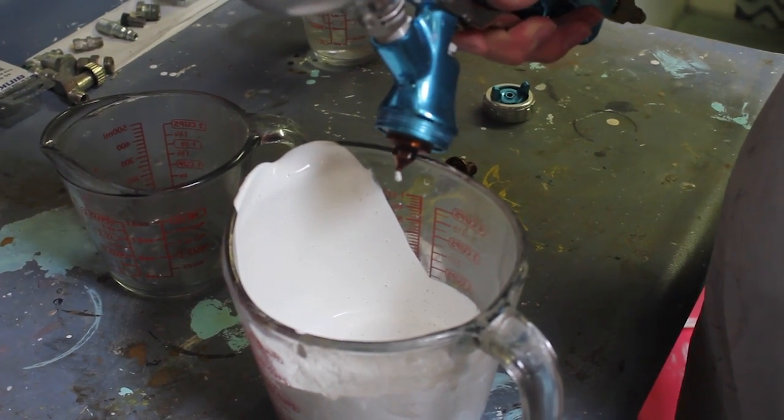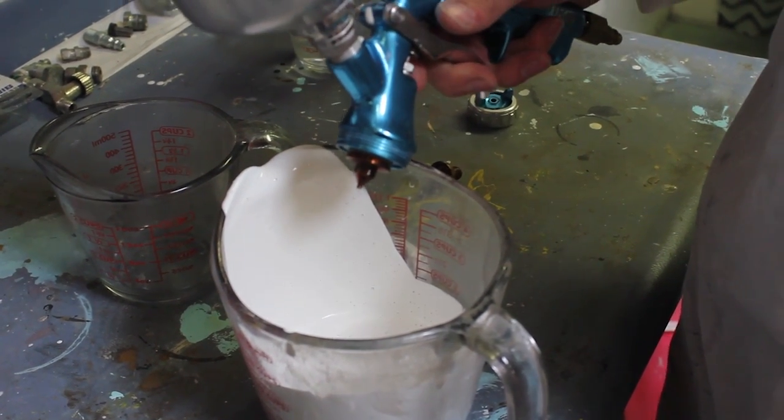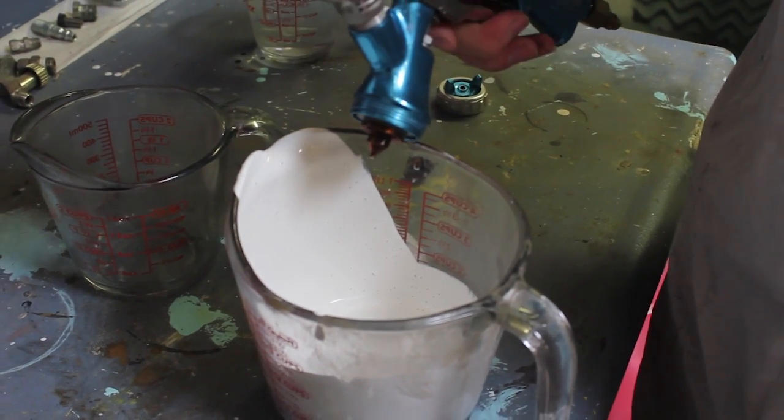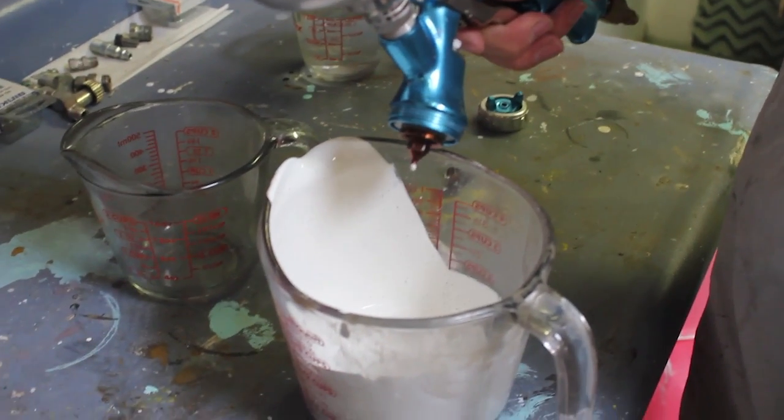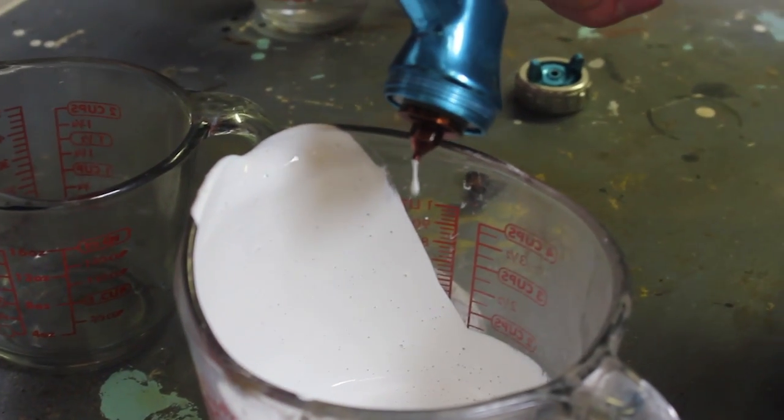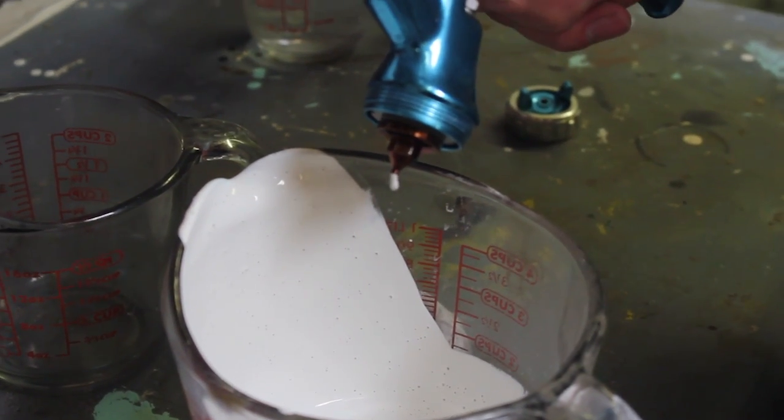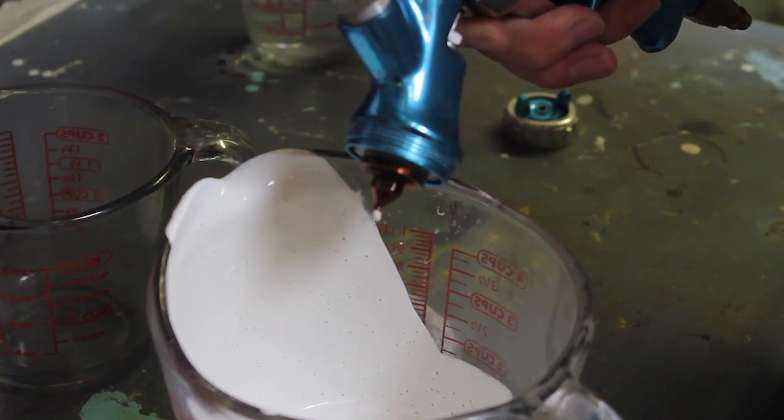All right, so we switched to the 1.8 nozzle. Most gravity guns, that might be the largest you can get. Some do go up to a 2.2 or 2.6. But as you can see, it's still a little bit sluggish. We're not getting material flowing. So for the most part, this material isn't going to spray without thinning.